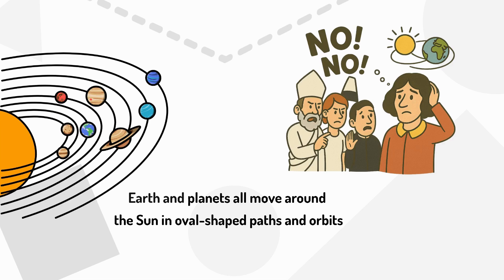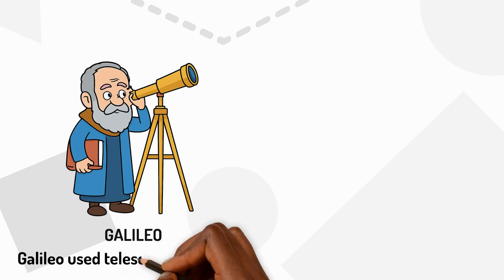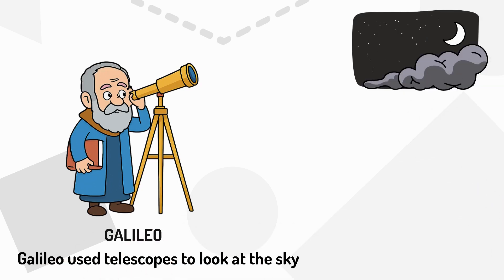But other smart people like Galileo used telescopes to look at the sky. They found proof that Copernicus was right.